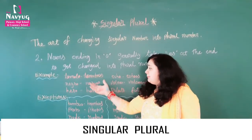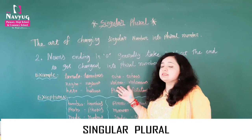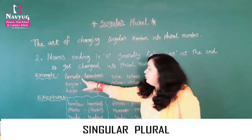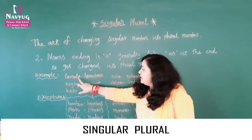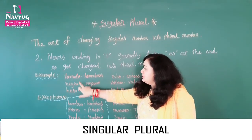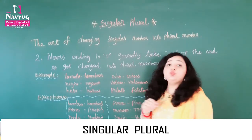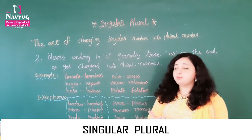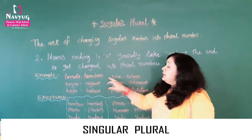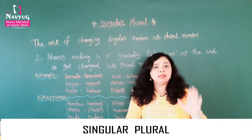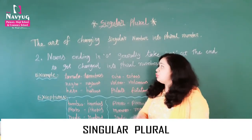Students, here in all of our examples, the nouns end in O, and their plural form is made by adding ES. So in general, nouns ending in O take ES in their plural form.